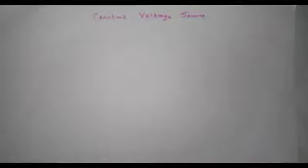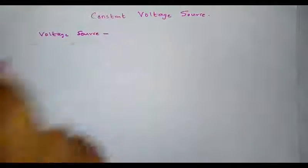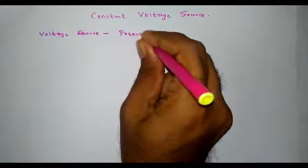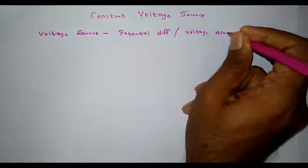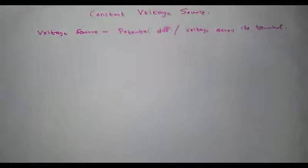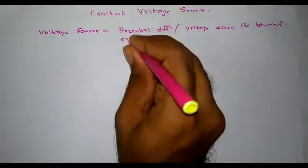Two important terms in the first module of the syllabus are constant voltage source and constant current source. Let's go through constant voltage source first. A voltage source can be termed as an energy source that establishes a potential difference or voltage across its terminals. Simply, it is a source of energy which gives a voltage or potential difference across its terminals. An example is a battery.